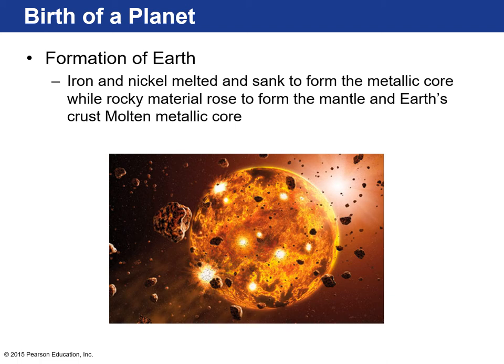Surrounding that most massive object were clumps of asteroid-sized material — coalescing dust grains of metal, rock, gas, and icy material. Those were the first what we refer to as planetesimals. There were a lot of them and they all collided with each other, starting to form the very first planets that began orbiting around our proto-sun.